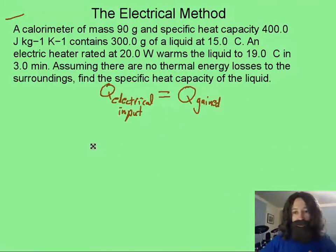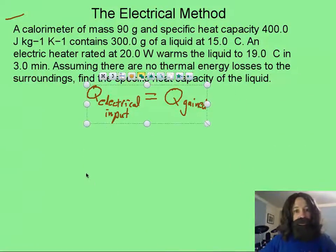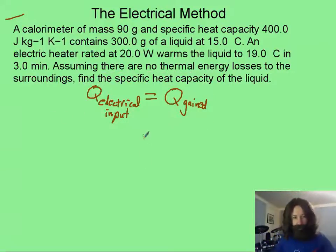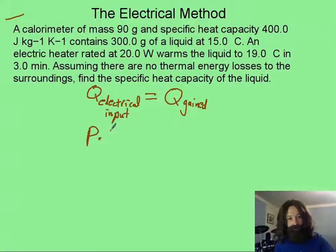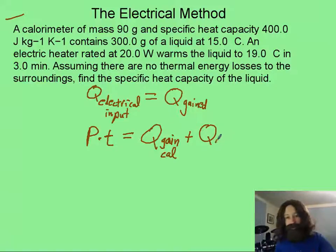Now, that start should be assuming that whatever electrical input you have in joules is going to be equal to the energy gained by the substances that are surrounding the electrical resistor. Now, we'll simplify this even a little bit more by saying that electrical input can be power times time, and there's going to be two substances gaining here. We're going to have energy gained by the calorimeter plus the energy gained by the liquid.